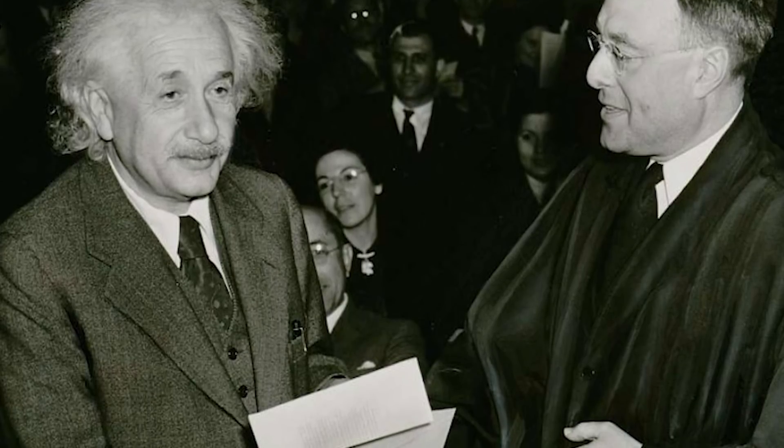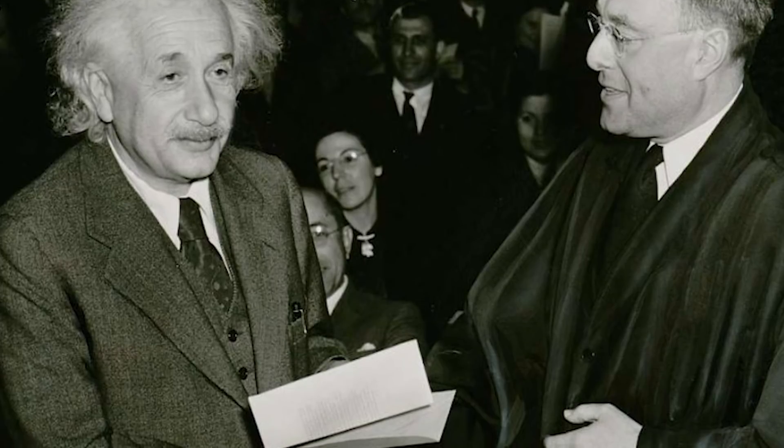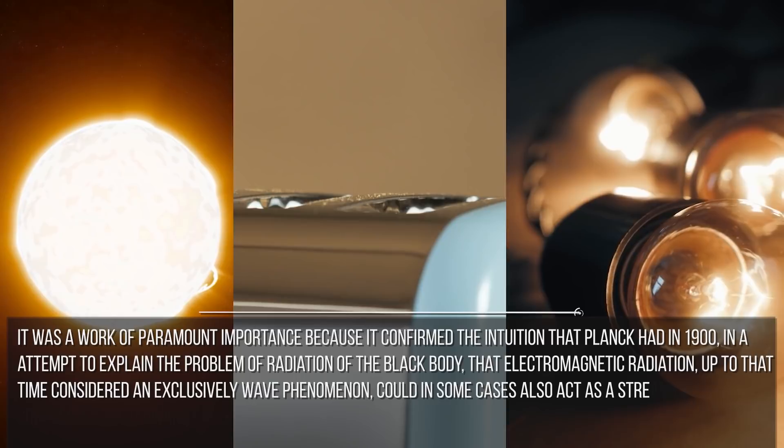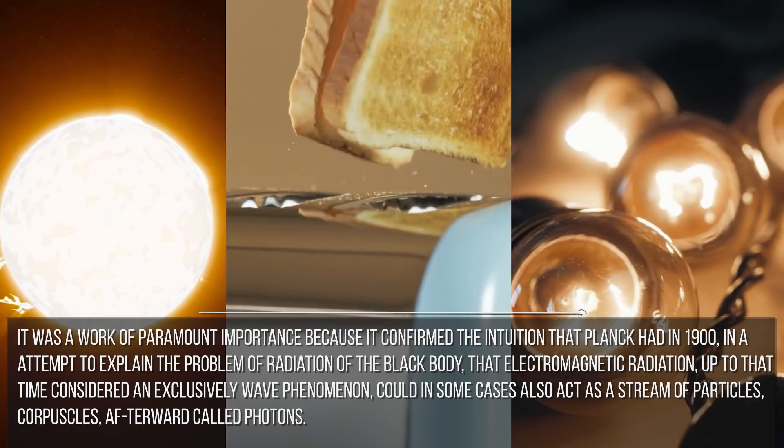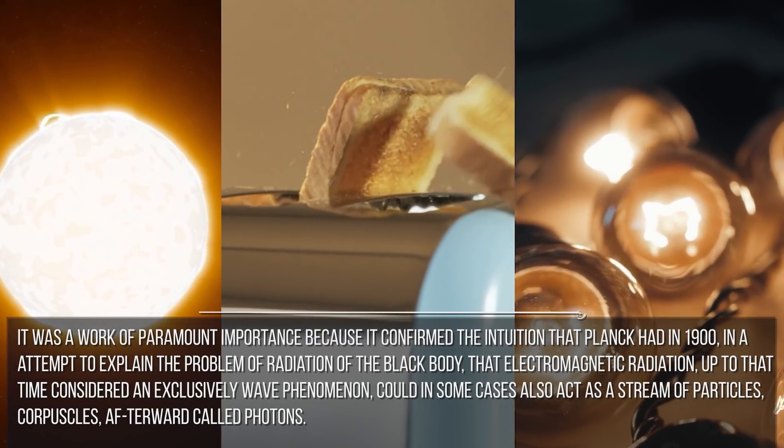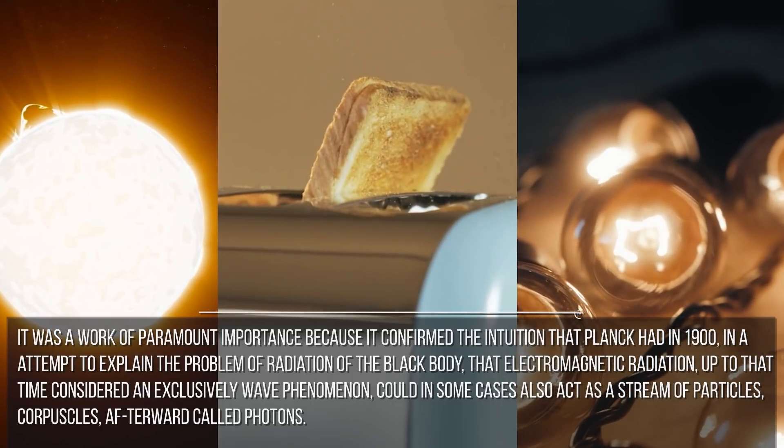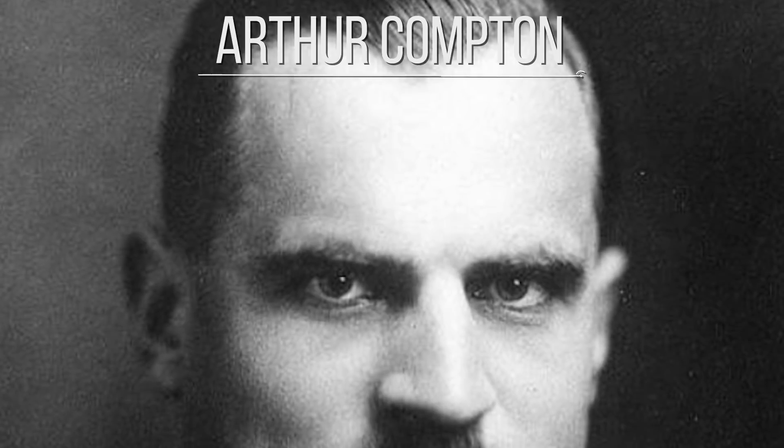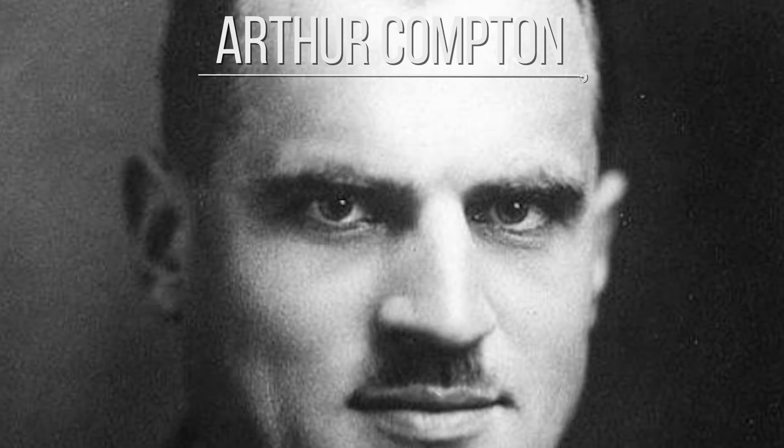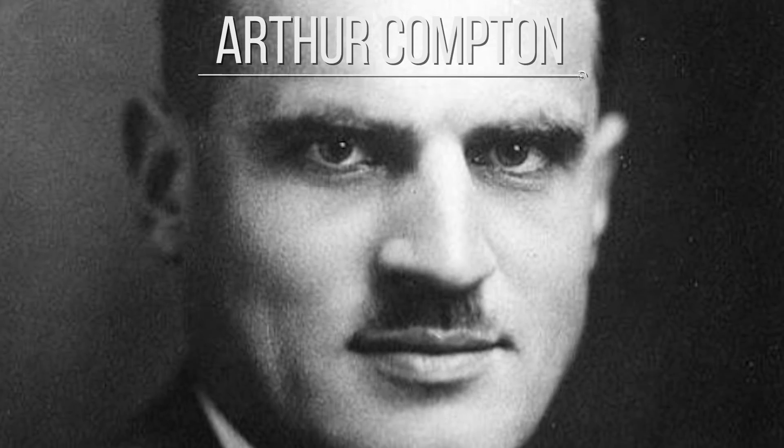On June 9, an article named on a heuristic viewpoint concerning the production and transformation of light was published. It was precisely this paper that will go to posterity as the discovery of the photoelectric effect and will let Einstein win the Nobel Prize in 1921. This is considered a fundamental contribution to quantum theory. It was a work of paramount importance because it confirmed the intuition that Planck had in 1900, in an attempt to explain the problem of radiation of the black body. That electromagnetic radiation up to that time considered an exclusively wave phenomenon could, in some cases, also act as a stream of particles, corpuscles afterwards called photons. This idea was confirmed by Arthur Compton a few years later when he discovered the effect that bears his name that definitively certify the accuracy of this insight.